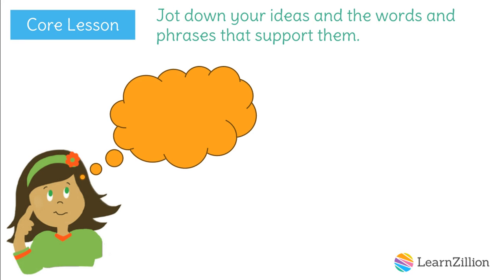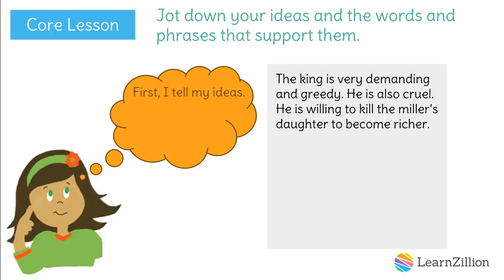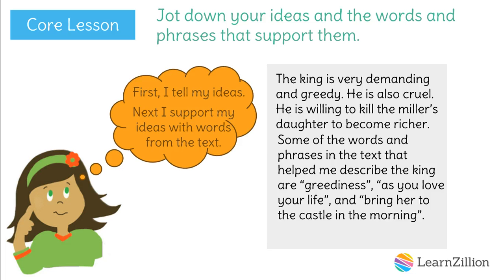Finally, we jot down our ideas and the words and phrases from the story that support them. I start by telling my ideas about the king. I write, the king is very demanding and greedy. He is also cruel. He is willing to kill the miller's daughter to become richer. Then, I add a sentence that includes words from the story that support my ideas. I write, some of the words and phrases in the text that help me describe the king are greediness, as you love your life, and bring her to the castle in the morning.